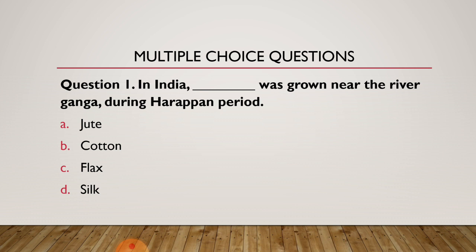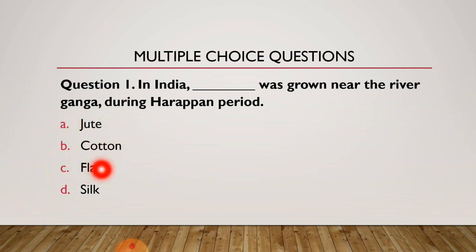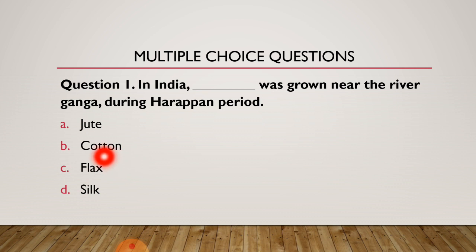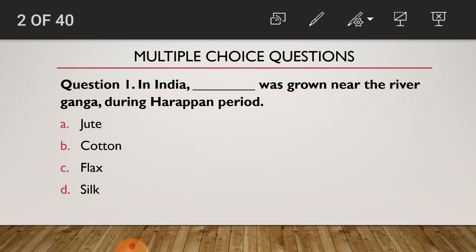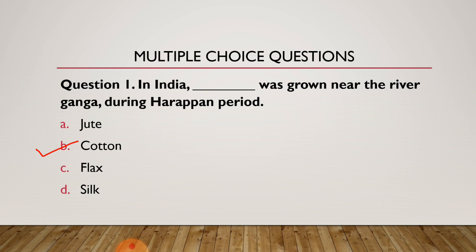Question number 1: In India, dash was grown near the river Ganga during the Harappan period. Options: jute was grown, cotton was grown, flax was grown, or silk was grown. Have you chosen your correct answer? The correct answer is cotton. In India, cotton was grown near the river Ganga during the Harappan period.